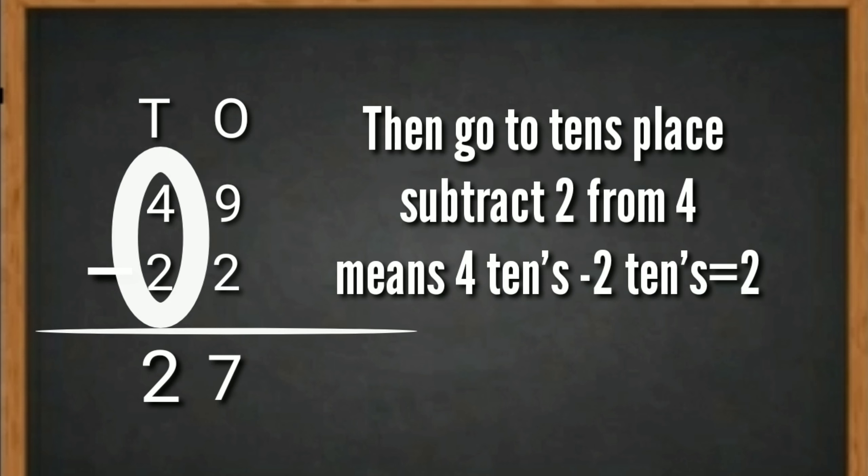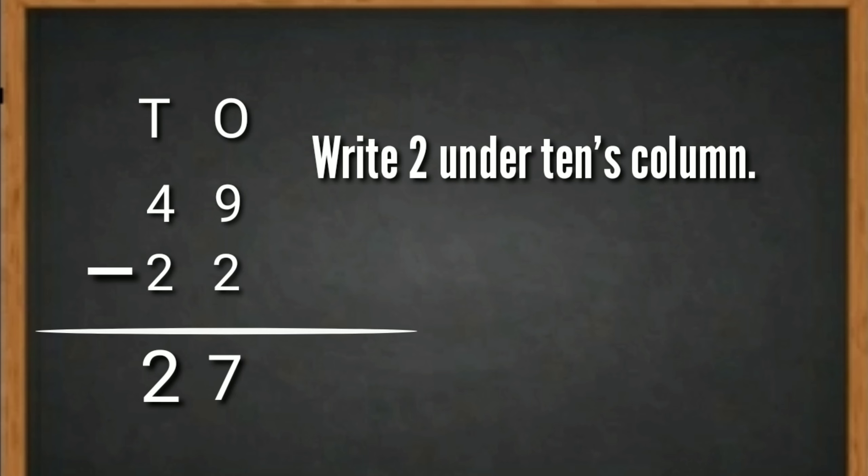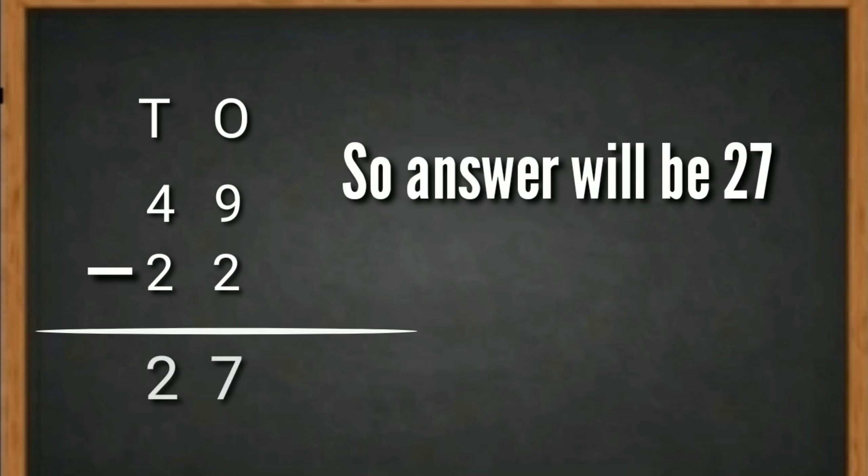Then go to ten's place. Subtract 2 from 4. Means 4 tens minus 2 is equal to 2. Write 2 under ten's column. So the answer will be 27.